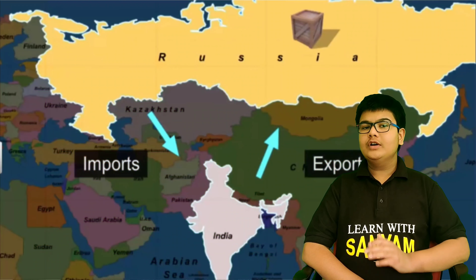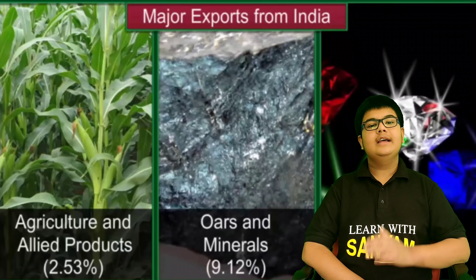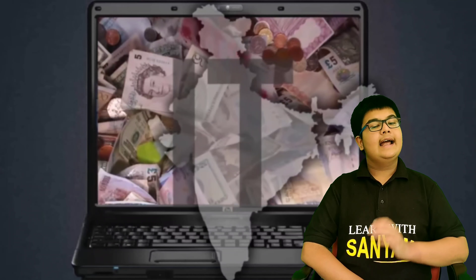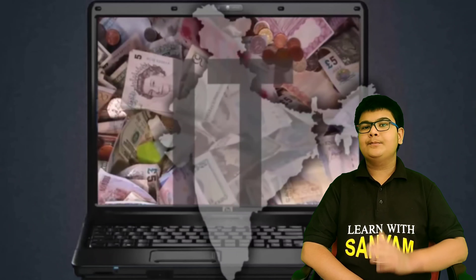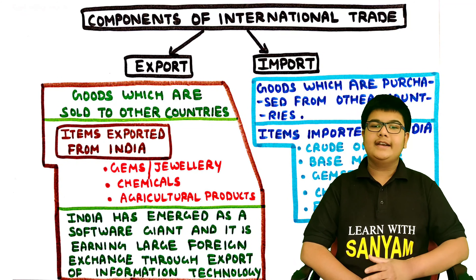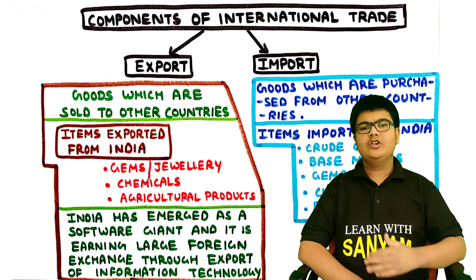The goods which are sold to other countries come under export. Items exported from India include gems, jewellery, chemicals, agricultural and allied products. India has emerged as a software giant and is earning a large foreign exchange through the export of information technology. A lot of software is developed in India and exported to developed countries. Call centers are made in India from which calls are made to all countries of the world — this is an example of export of information technology from India.